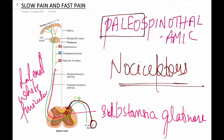As the fibers ascend upwards and reach the brain stem region, they give rise to collaterals — mainly three: to the hypothalamus, to the periaqueductal grey nucleus, and to the reticular formation. This gives rise to certain pathways, mainly the spino-reticulo-thalamic pathway.